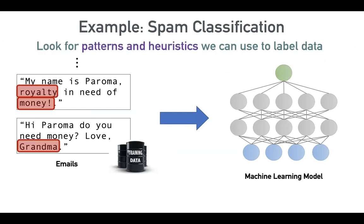When we have all these emails and we're labeling them by hand, we would look for some patterns and heuristics to label them. For example, if I see an email that claims someone is royalty and needs money, I'll say this is probably spam. If I see an email that has a lot of misspellings, then I'll say it's probably spam. But if I see an email that says it's from my mom or grandmom, I'll say this is a normal email — it shouldn't go to my spam folder.